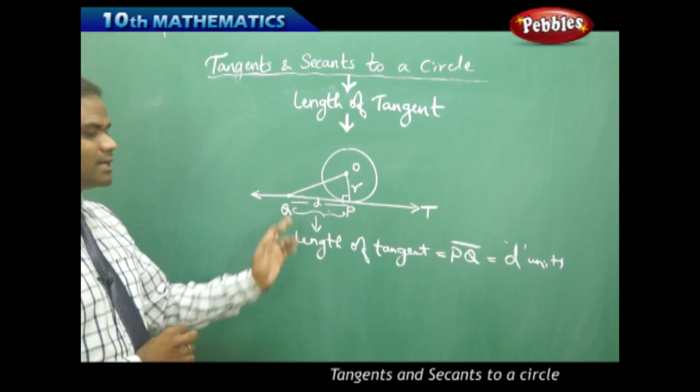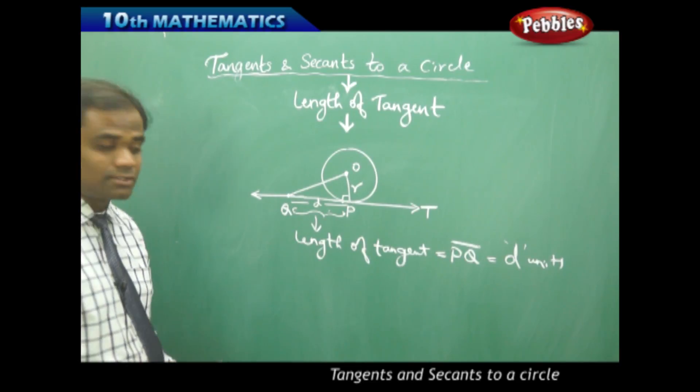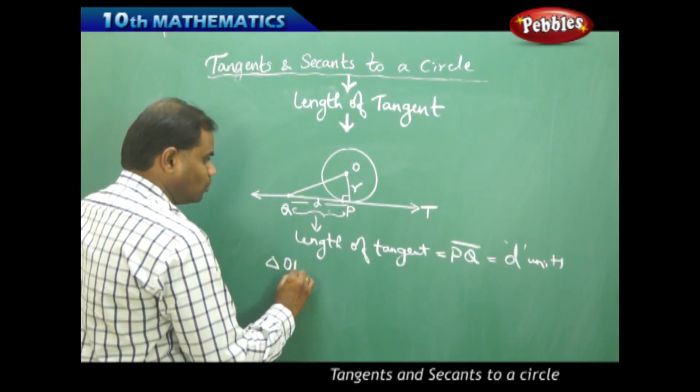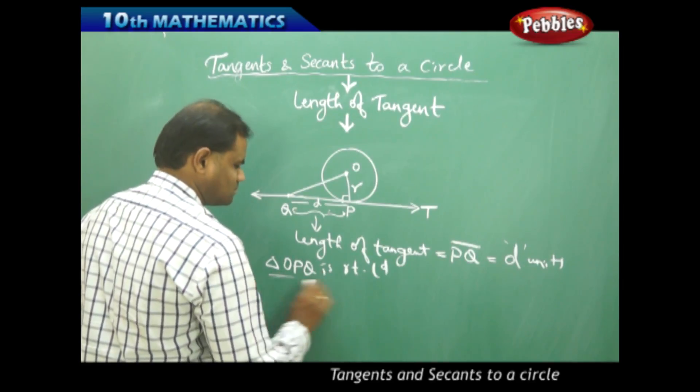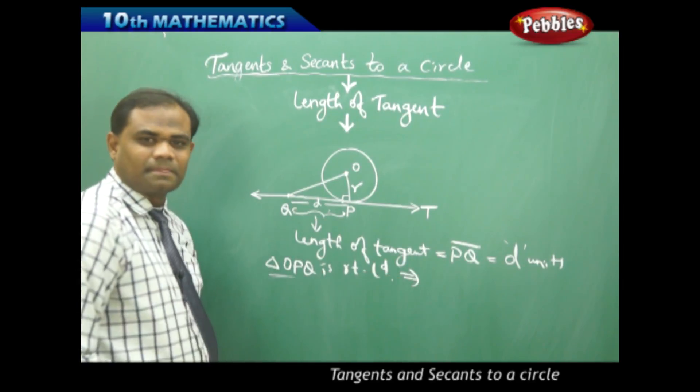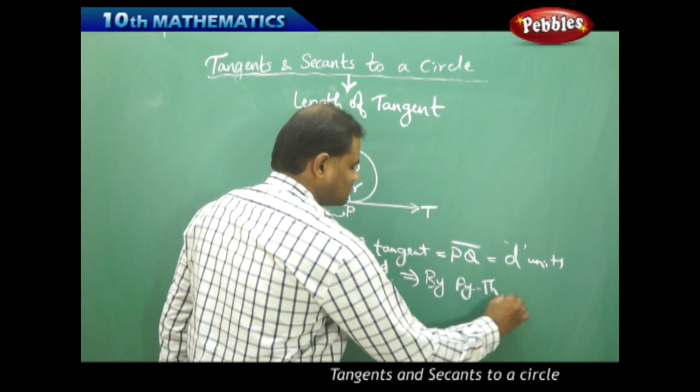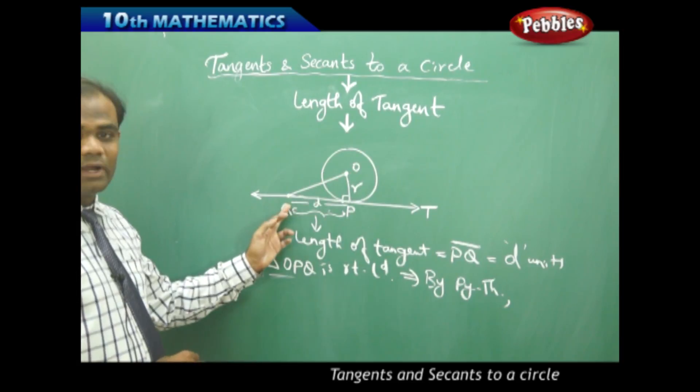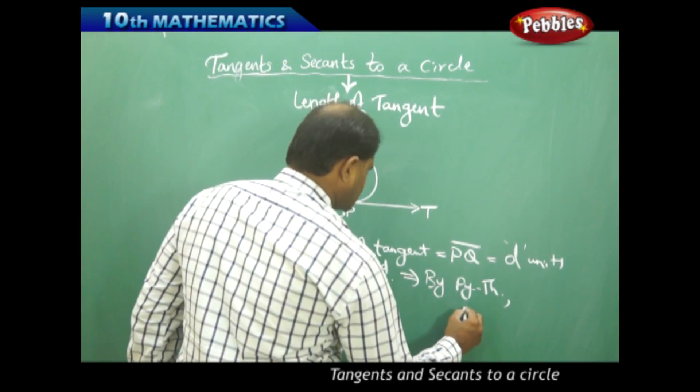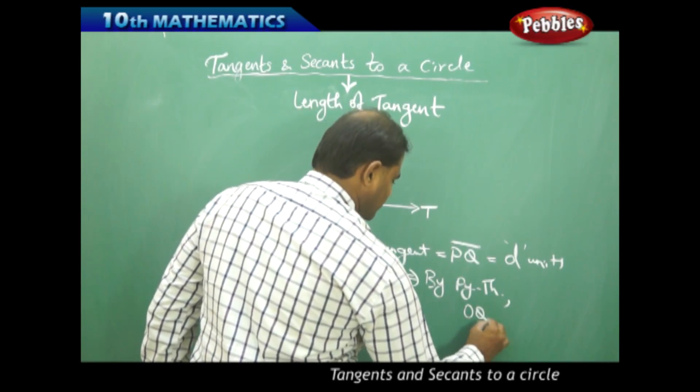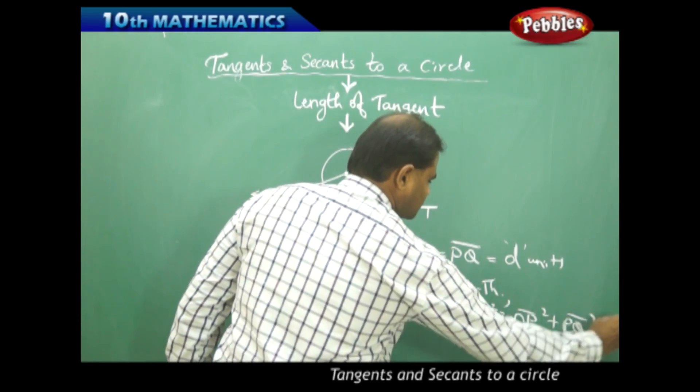Now since OPQ is a right angle triangle, immediately the Pythagoras theorem comes into existence. Triangle OPQ is right angled. That implies by Pythagoras theorem I clearly get OQ squared equals OP squared plus PQ squared. So by Pythagoras theorem I get OQ squared equals OP squared plus PQ squared.